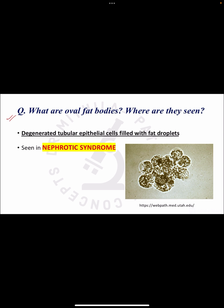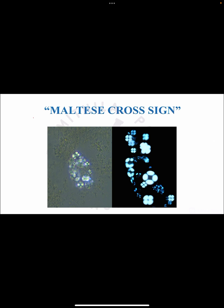The next question is: what are oval fat bodies? Oval fat bodies are degenerated tubular epithelial cells filled with fat droplets. They are seen in nephrotic syndrome, where lipiduria is present and fat droplets are taken up by the renal tubular epithelial cells. When viewed under polarizing microscopy, these oval fat bodies show a Maltese cross sign — this is an important MCQ and viva question.